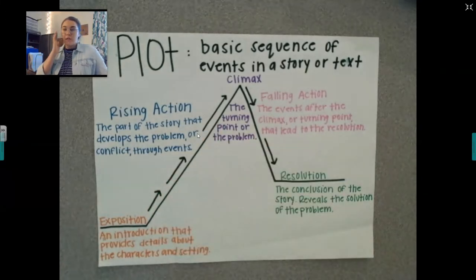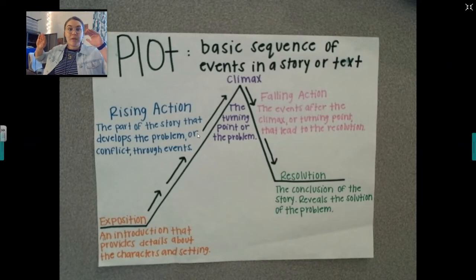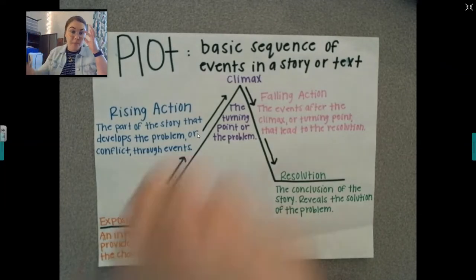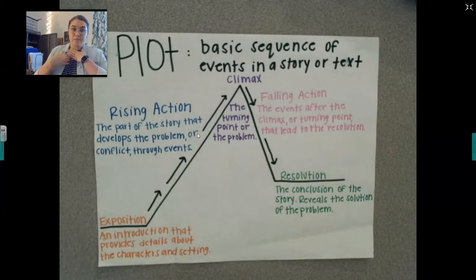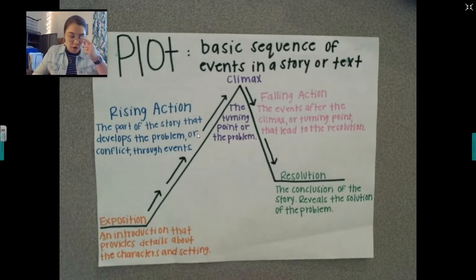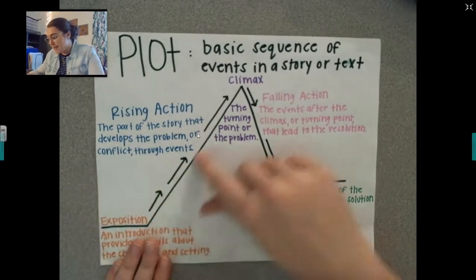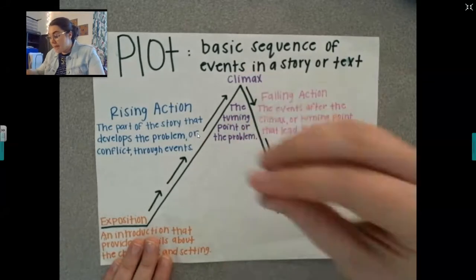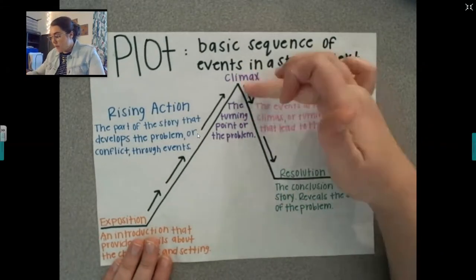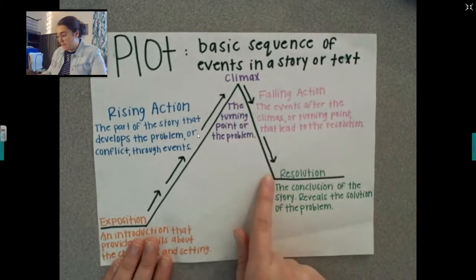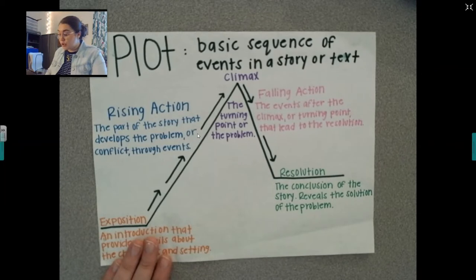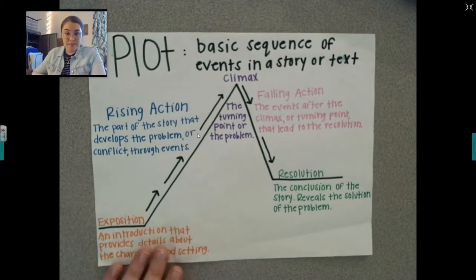The rising action — I want you to think of this plot chart as a roller coaster. The rising action is like the part of the story right before the big problem, when it starts building. Your climax is the main turning point or the problem in the story. Falling action is the events after the main problem. And your resolution is the conclusion of the story, or how the problem is solved.